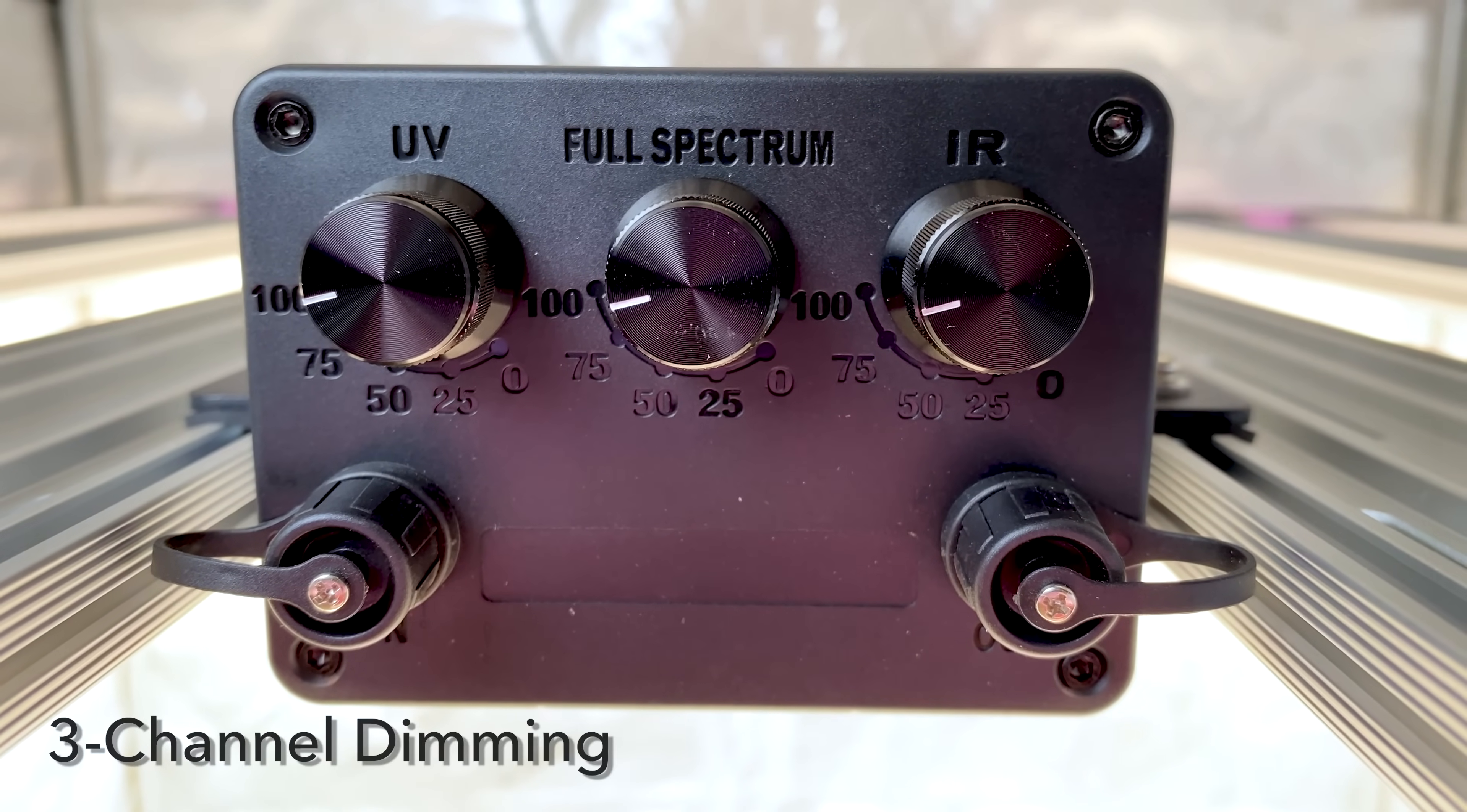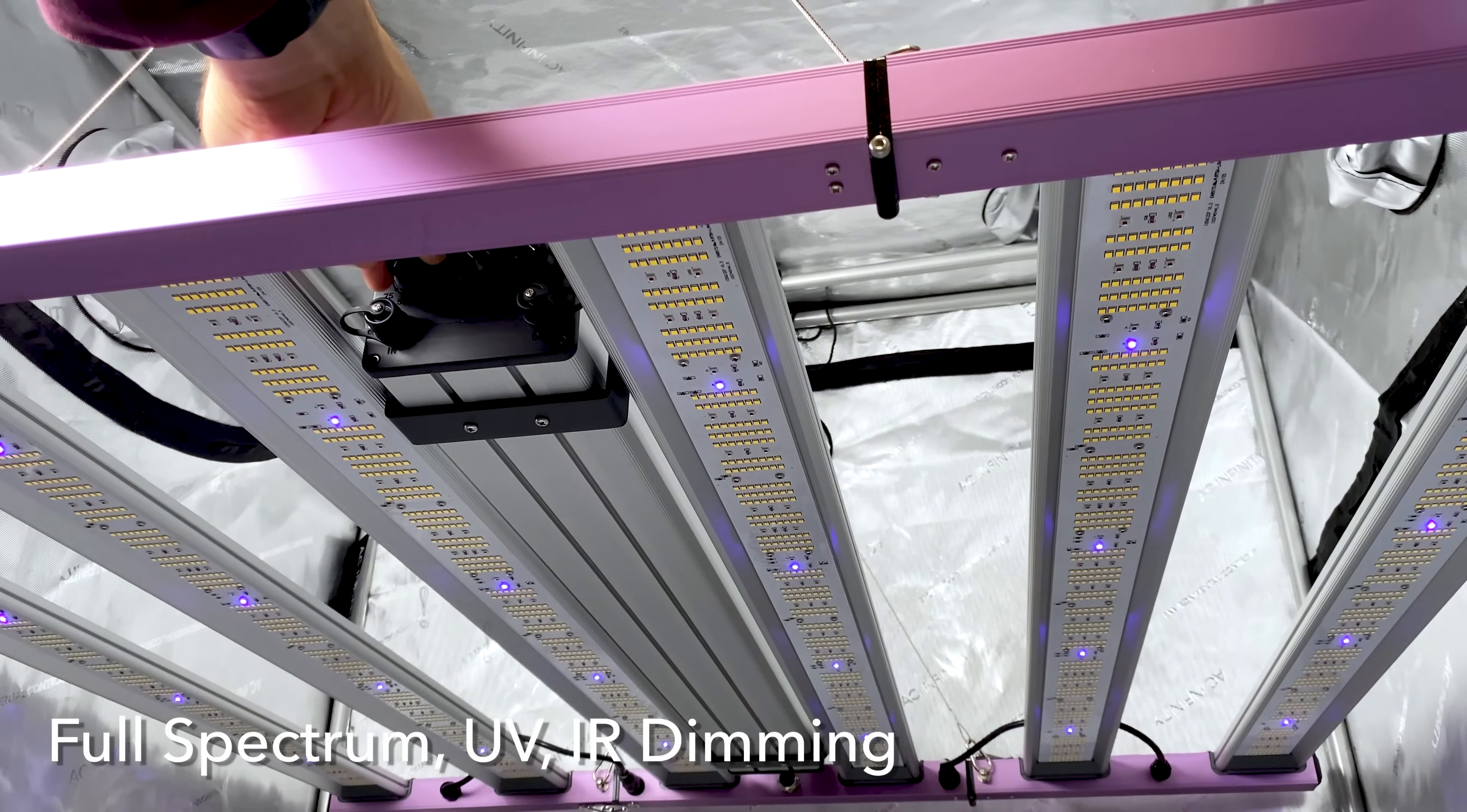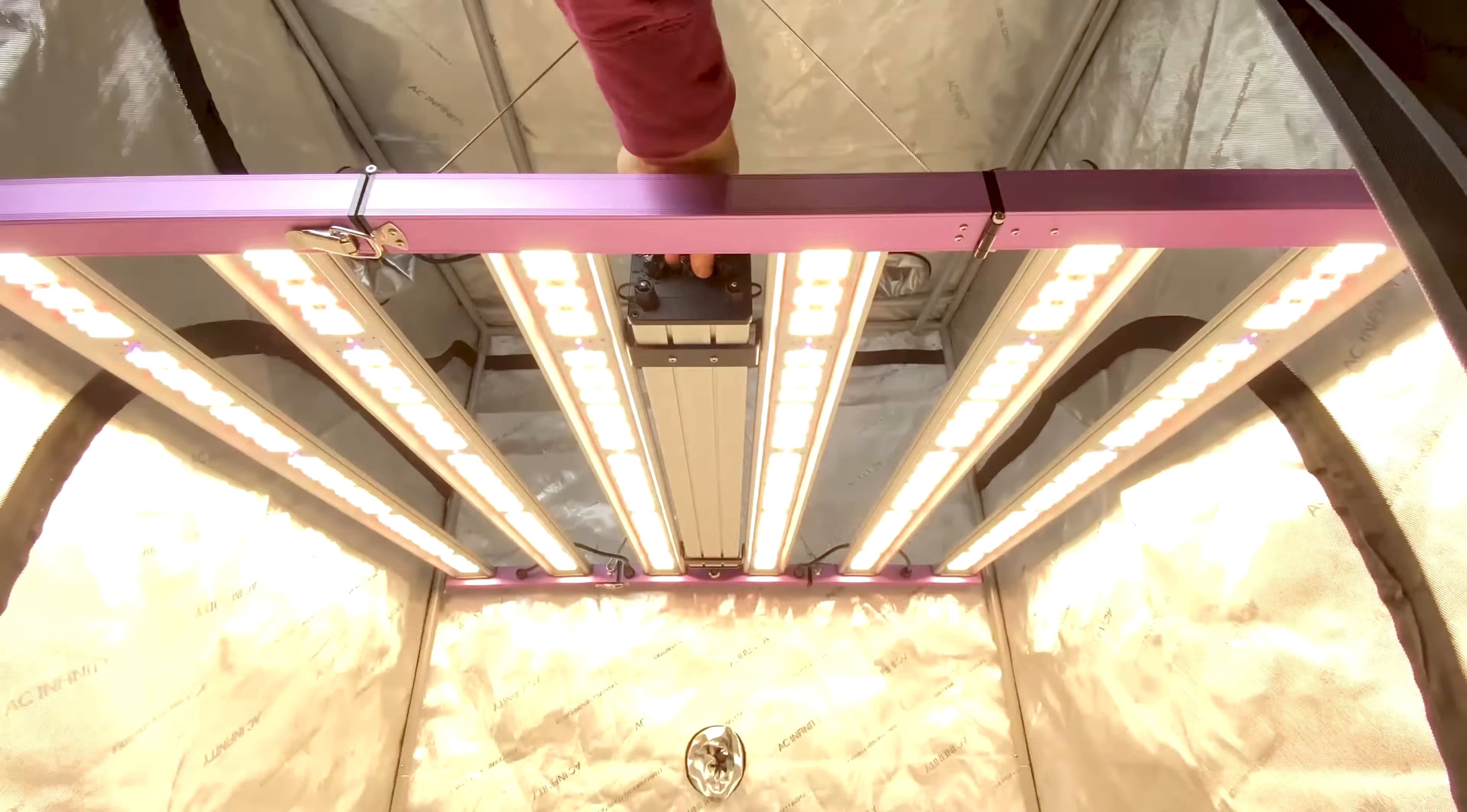One of the standout features is the onboard multi-channel dimming system. You can easily and independently adjust the output of the full spectrum, UV, and IR channels in 25% increments using the onboard dials. This allows you to fine tune the light intensity and spectrum to match your plants specific needs.